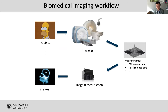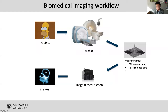Here's the overview of a biomedical imaging workflow. We have a subject — participants or patients — inside an imaging system. Measurements are acquired through the experiments: in terms of measurements, we have MRI k-space data, or PET sinogram data. The raw measurements go through image reconstruction, and then we generate the image of the subject. This is the complete workflow in terms of imaging and reconstruction.